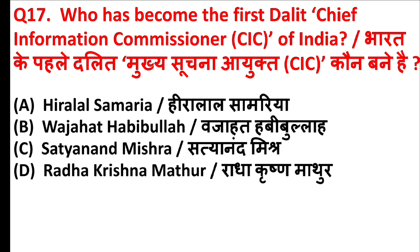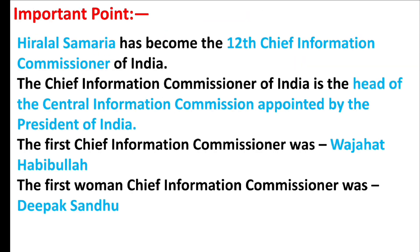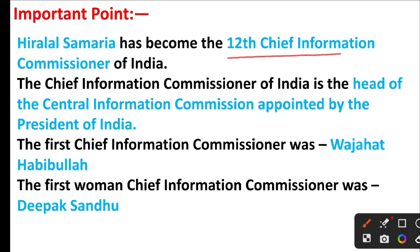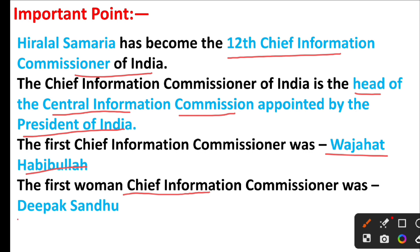Who has become the first Dalit Chief Information Commissioner of India? The right answer is option A: Hiralal Samaria. Friends, Hiralal Samaria has become the 12th Chief Information Commissioner of India. The Chief Information Commissioner of India is the head of the Central Information Commission, appointed by the President of India. The first Chief Information Commissioner was Wajahat Habibullah. The first woman Chief Information Commissioner was Deepak Sandhu.